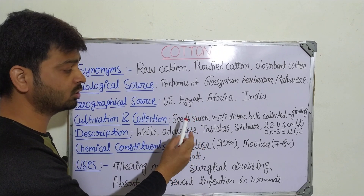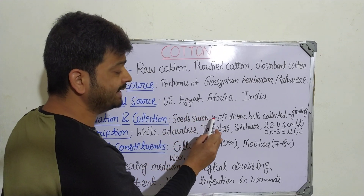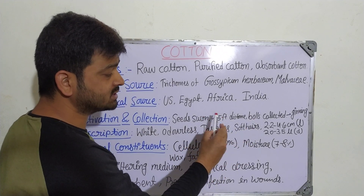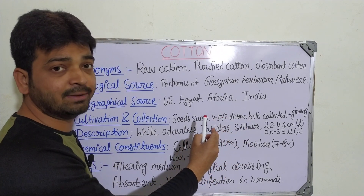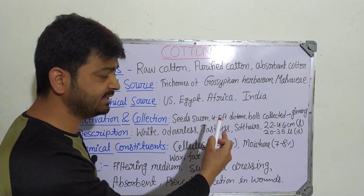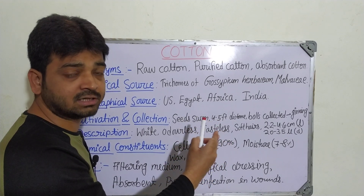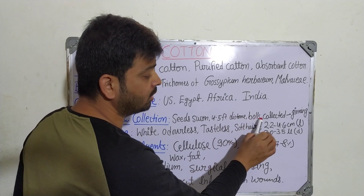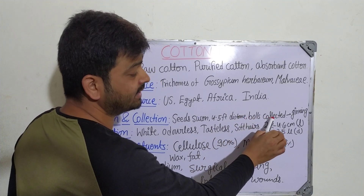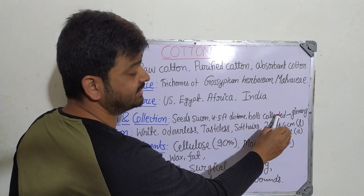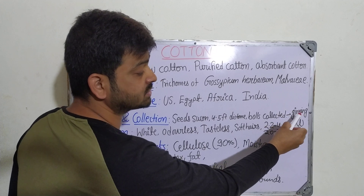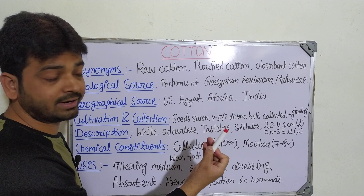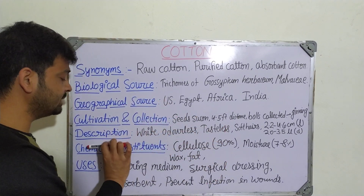Coming to cultivation and collection: seeds are sown, so seed propagation is done. Seeds are sown at four to five feet distance. Once the plant grows, proper fertilizer, proper irrigation, and all other intercultural care must be done. After that, the boll is collected and subjected to the ginning process — G-I-N-N-I-N-G — from which we get the fibers.